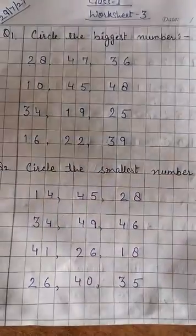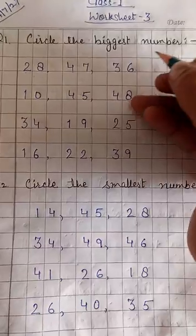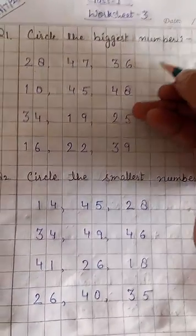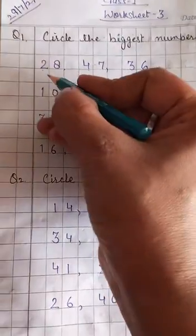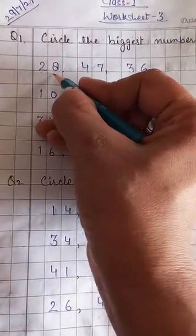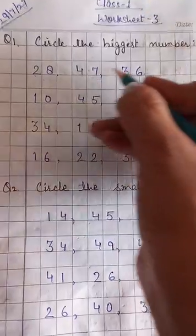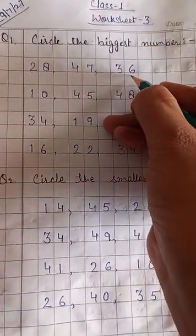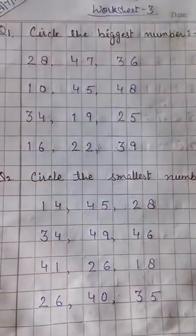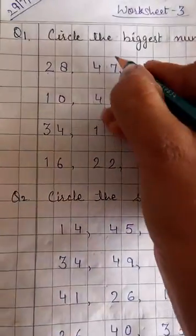Now, the first question is circle the biggest number. Okay, firstly we observe the numbers. Here is 28, 47, 36. Which one is the greatest number? Yes, 47.